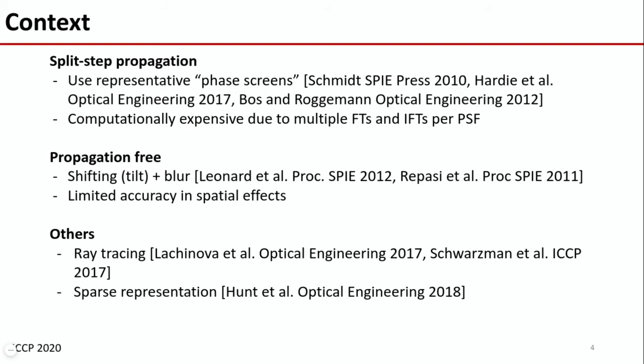Furthermore, we'll have to do this for roughly every pixel in the image. Propagation free methods also exist and primarily focus on the tilt effects and impart some spatially invariant blur. While these are fast, they are not necessarily accurate to the theory, specifically with respect to the blurring effects.